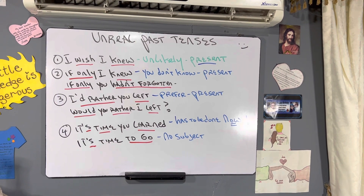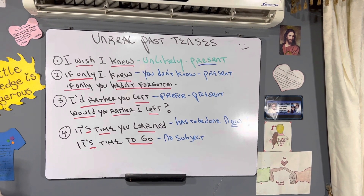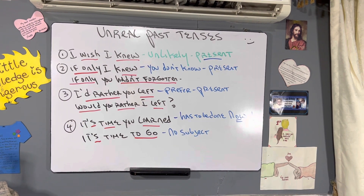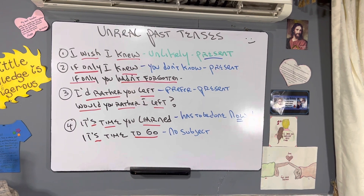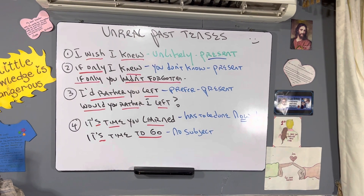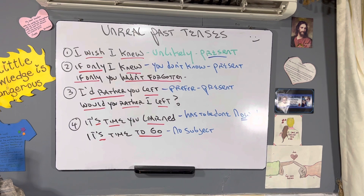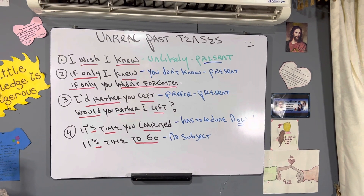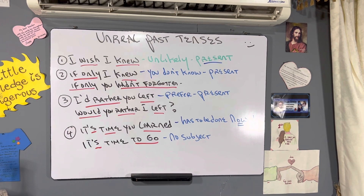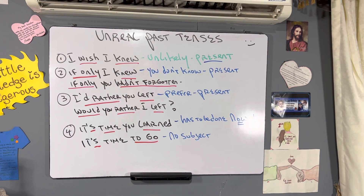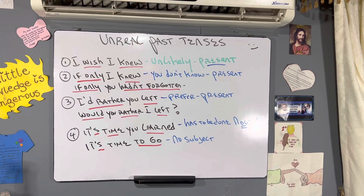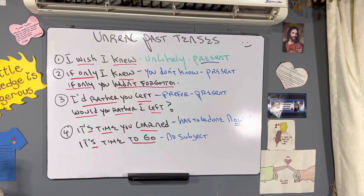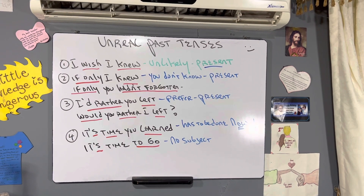And then another good one: it's time you learned. Verb 'to be' in present, 'learned' in past. With 'it's time' — it's time you learned that if you don't participate in the future, you're the problem. It has to be done. It's time to go — that's the infinitive structure, and you don't need a subject. It's when you don't want a subject.